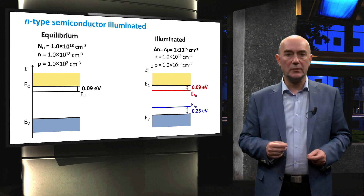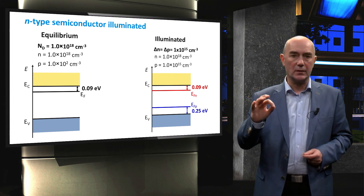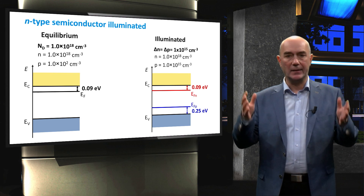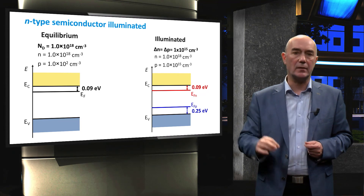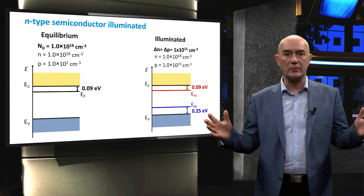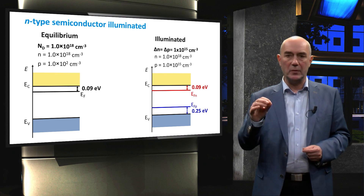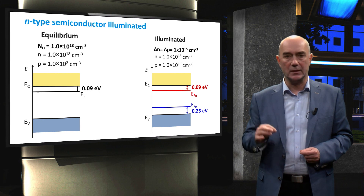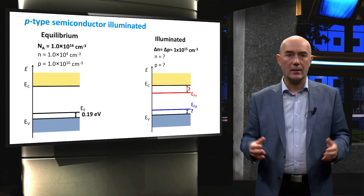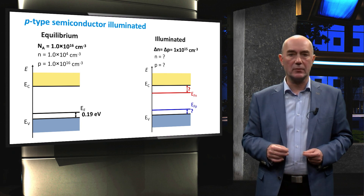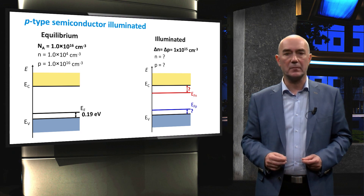The key takeaway from this example is that with moderate to high doping at this level of illumination, the quasi-Fermi level of the majority carriers does not change with respect to the equilibrium Fermi level position. In addition, we must introduce the quasi-Fermi level of the minority carriers into the band diagram. The same applies for P-type semiconductor materials — I invite you to try and calculate those quasi-Fermi level positions.